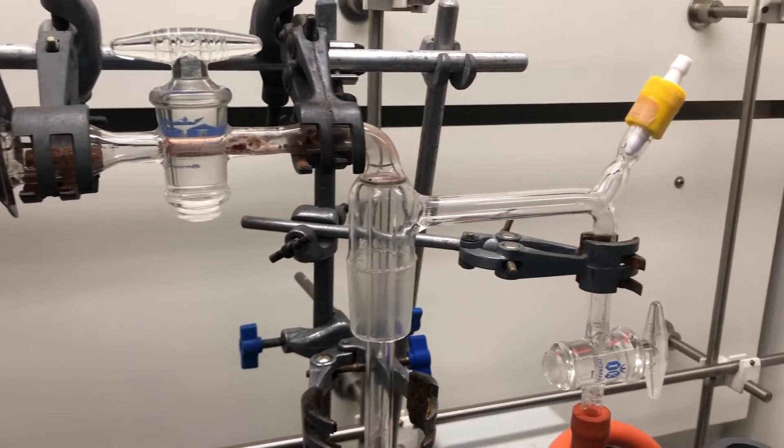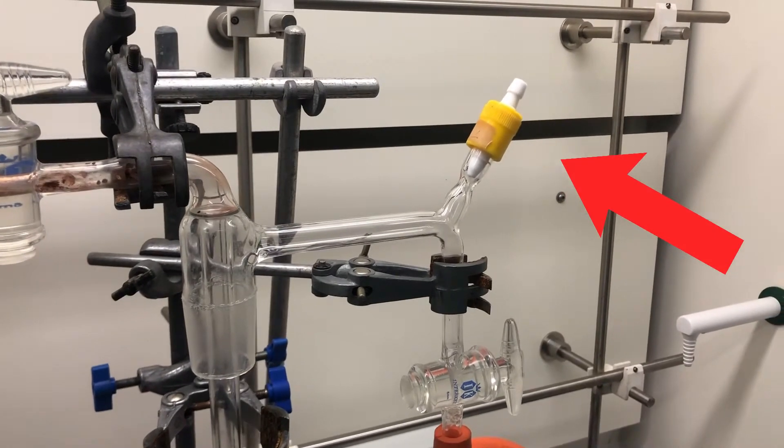You can see here as well that we have an air bleed, which is what we closed last to put our line under vacuum.